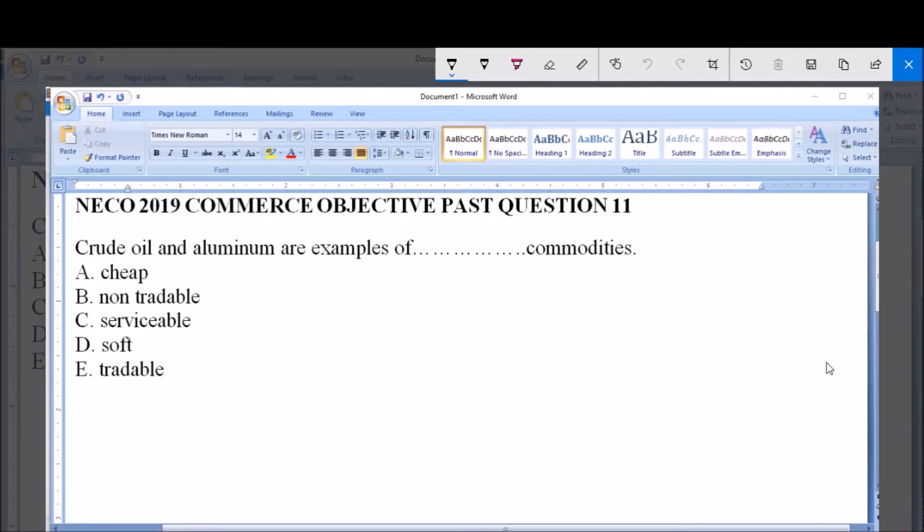Hello and welcome. I'm going to be answering NECO 2019 Commerce Objective Past Question 11. Crude oil and aluminium are examples of... commodities. A. Cheap. B. Non-tradable. C. Serviceable. D. Soft. E. Tradable.